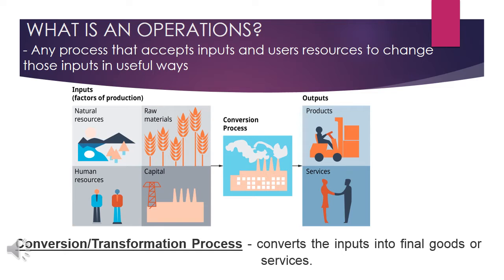Please check the figure shown. This figure shows that operation or production — the creation of products and services — is an essential function in every firm. Operation turns inputs such as natural resources, raw materials, human resources, and capital into outputs which are products and services. Managing this conversion process is the role of operation management.